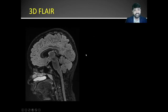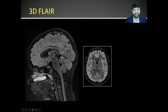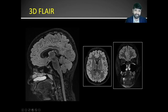Coming to the 3D FLAIR sequence — 3D FLAIR is an extremely useful sequence, particularly when performing 3D MRI. It provides excellent resolution and covers not only the brain parenchyma but many other areas as well. It can also be reformatted into axial and coronal images.